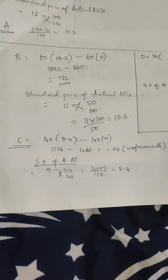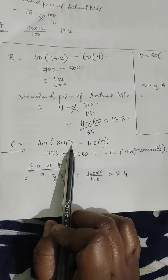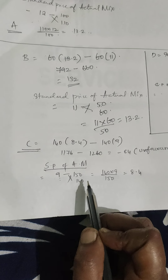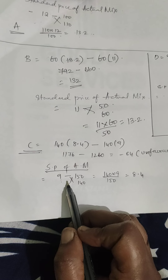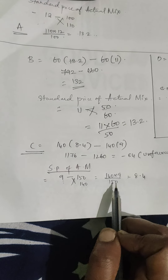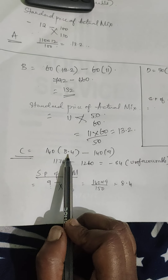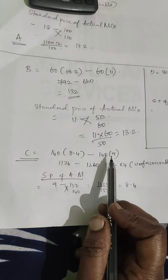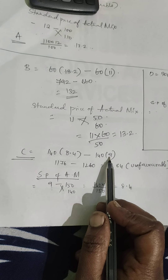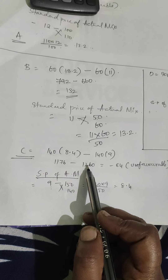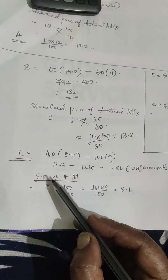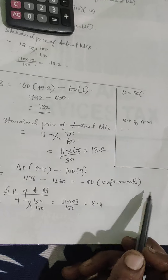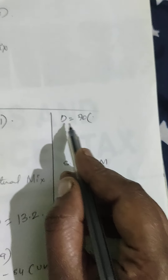For Product C, the actual quantity is 140. The standard price is 9 for a standard quantity of 150. Cross-multiplying: 140 × 9 ÷ 150 = 8.4, which is the standard price of actual mix. So: 8.4 × 140 = 1176, minus 140 × 9 = 1260. Therefore 1176 − 1260 = −84, which is an unfavorable situation.